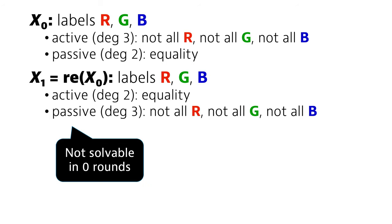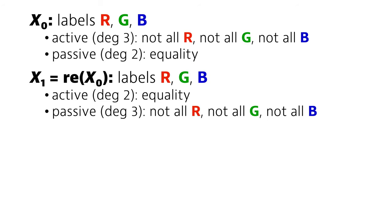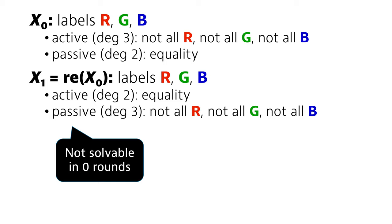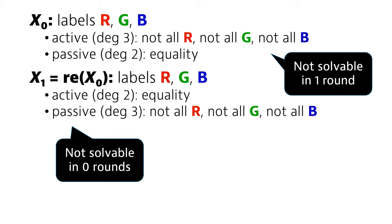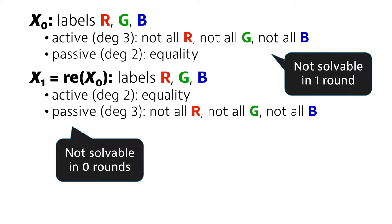Again, it is easy to check that this can't be solved in zero rounds. Active nodes must use the same color for both of their incident edges, and if you apply any deterministic rule, the only possible algorithm is something like color everything red. And this will clearly fail. So we already know something. X1 can't be solved in zero rounds. So the original problem X0 can't be solved in one round. You need at least two rounds to solve X0.